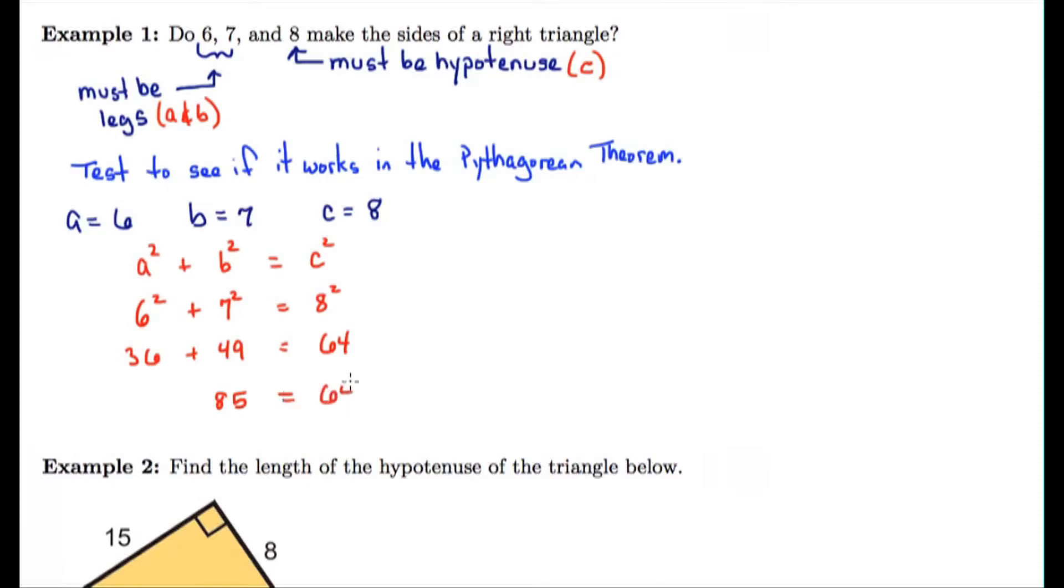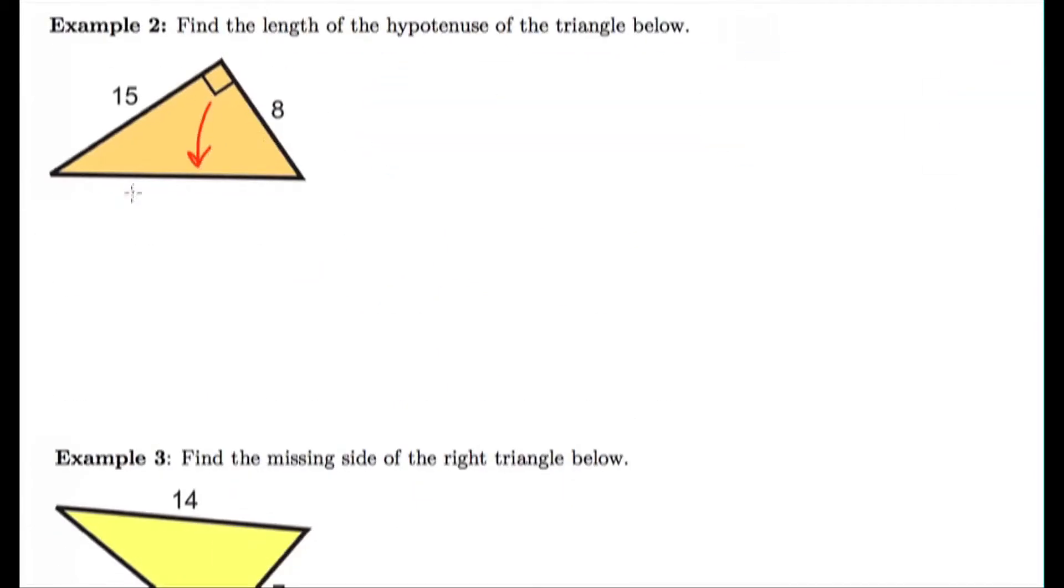I get thirty-six plus forty-nine equals sixty-four. Eighty-five equals sixty-four. Well that's not true. Therefore, these lengths do not make up sides of a right triangle. They might work for another kind of triangle. Specifically, it will work for an acute triangle.